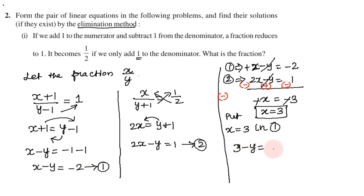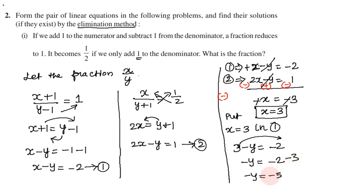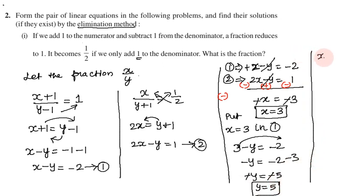x equals 3. Substituting into equation 1: 3 minus y equals minus 2, so minus y equals minus 2 minus 3 equals minus 5, and y equals 5. So the fraction is 3 by 5.